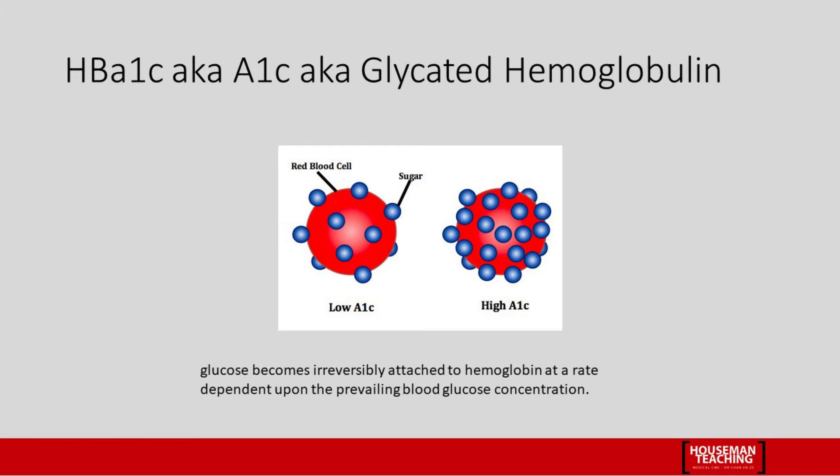So what is HbA1c? Also known as A1c or glycated hemoglobin — 'glycated' means sugar. When sugar is in your blood, it irreversibly attaches to the hemoglobin. The higher the blood sugar concentration, the more sugar irreversibly attaches. By measuring the concentration of glycated hemoglobin, it reflects the average sugar concentration in the blood over time. Blood sugar tends to rise and fall throughout the day, but the concentration of HbA1c remains fairly stable and constant.